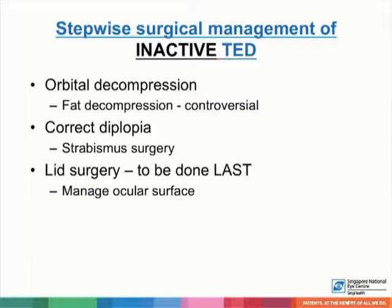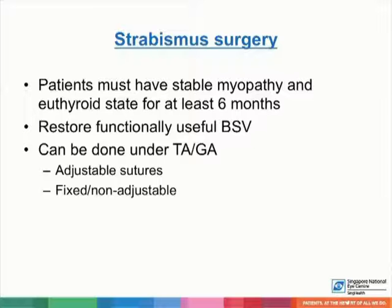This slide shows the step-wise surgical management of inactive thyroid eye disease. For patients who have proptosis deemed cosmetically unacceptable, an orbital decompression can be offered. Patients who have diplopia can be offered strabismus surgery, and those who have lid problems such as upper lid retraction can be offered surgery, but only at the last instance. Patients must have stable myopathy and be in a euthyroid state for at least six months before surgery is offered. The aims of surgery are to restore functionally useful binocular single vision, and can be performed under topical or general anesthesia with either adjustable or fixed sutures.